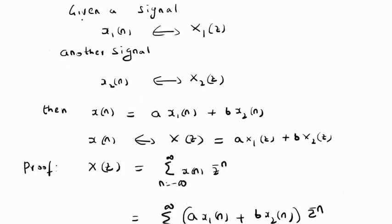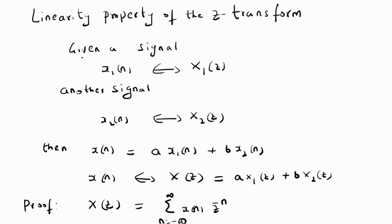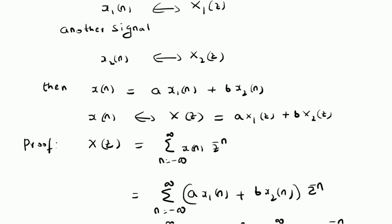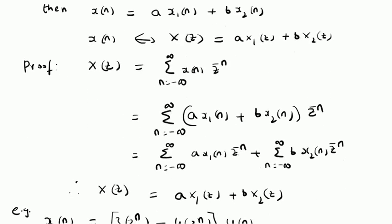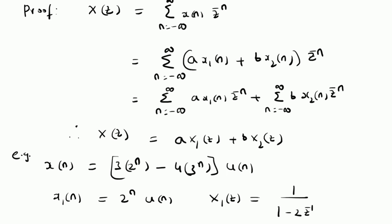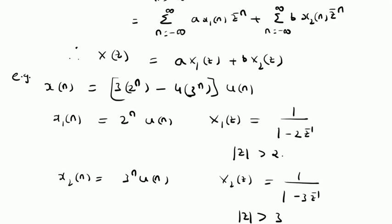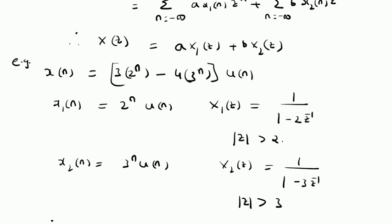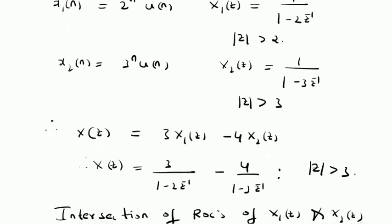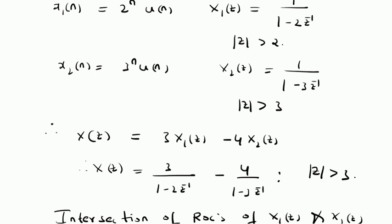To summarize, we have looked at the definition of the linearity property for Z-transforms, which basically says that when we have two signals x1 of n and x2 of n, and x of n is a linear combination of these two signals, then the corresponding Z-transform is also a linear combination of the corresponding Z-transforms. That is, x of z is a linear combination of x1 of z and x2 of z. We also looked at an example using this linearity property to find the Z-transform of x of n, which is three times two power n minus four times three power n times u of n, by combining the individual Z-transforms with the given weights. The corresponding ROC is the intersection of the ROCs of the individual Z-transforms. Thanks for watching.